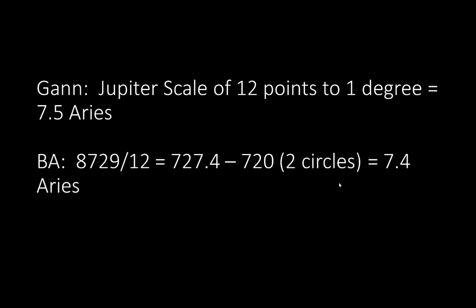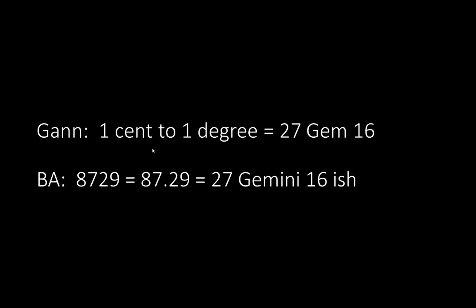Gann: one cent to one degree equals 27 Gemini 16. BA: 8,729 equals 87.29. And this equals two full signs plus 27.29 into Gemini, which translates to 27 Gemini 16-ish. Welcome to the beginning. This is BA — have yourself a great day. Bye-bye.